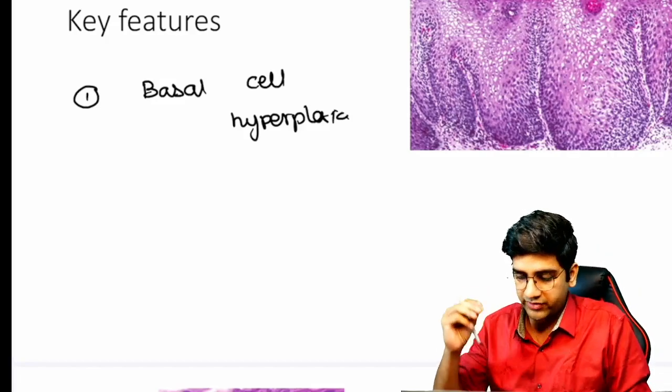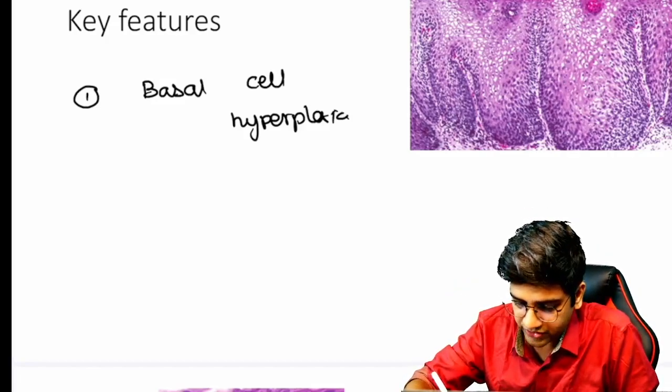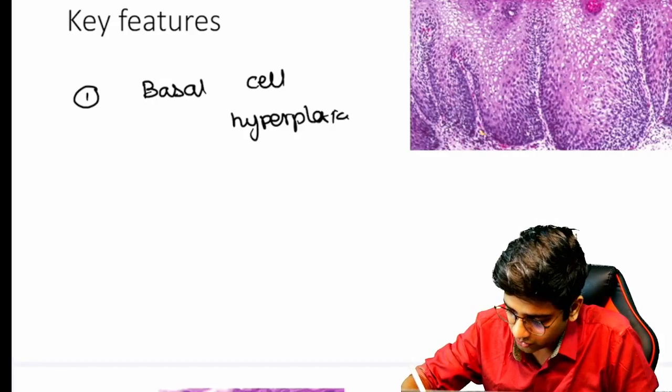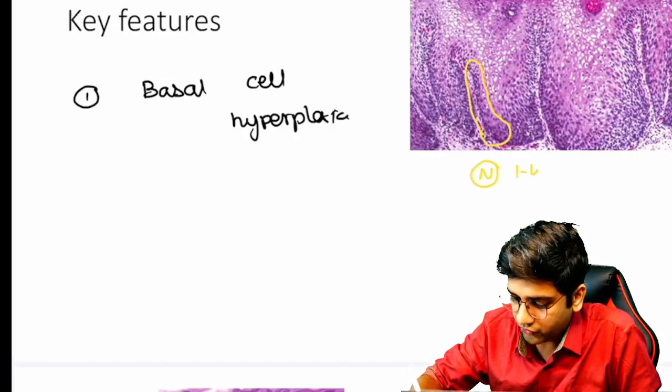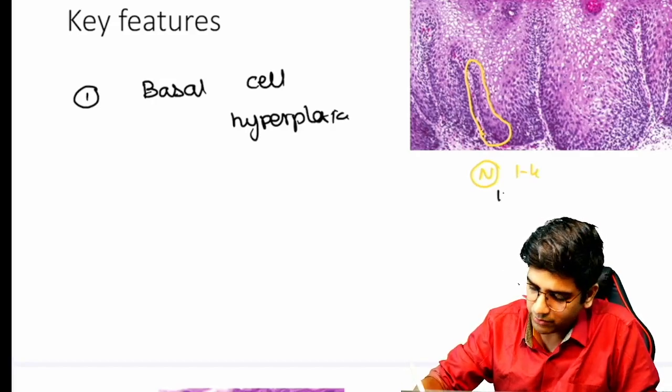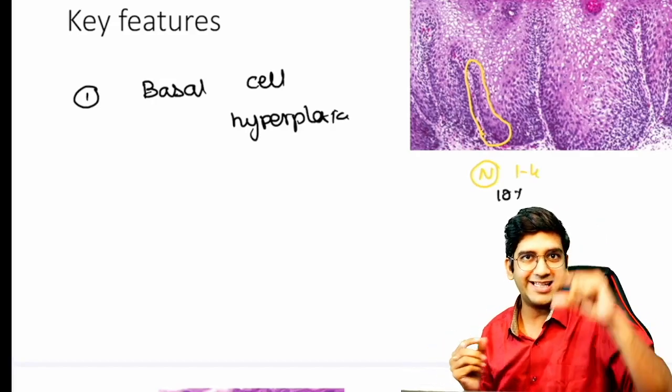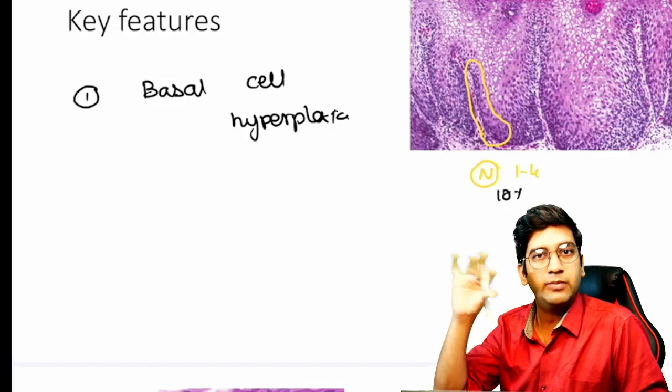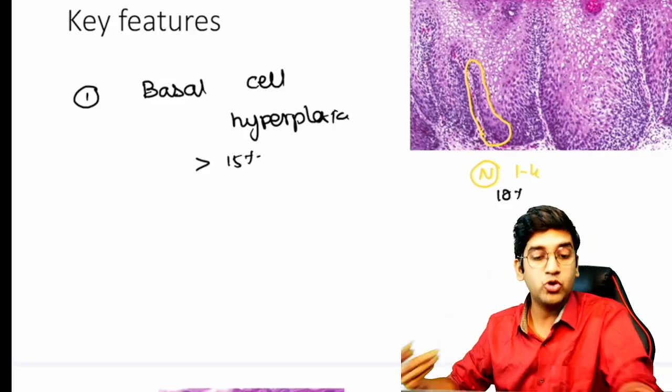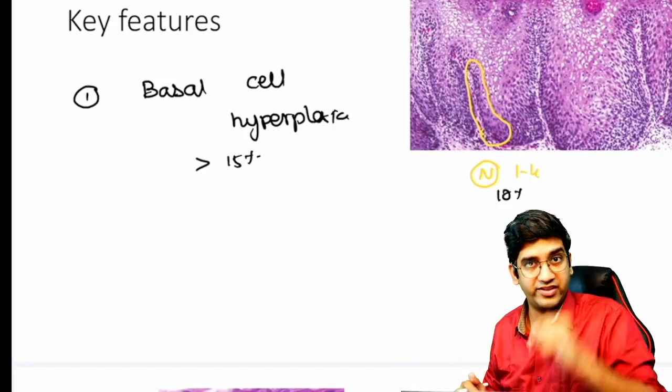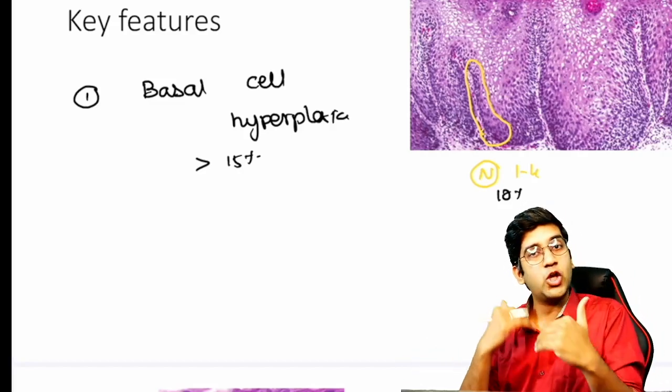When I take a normal basal epithelium of the esophagus, you can see here the normal basal epithelium. Normally it's around one to four layer thickness, or let's say approximately 10 percent of the entire thickness of the squamous epithelium of the esophagus. If it goes beyond 15 percent, I'm going to call that basal cell hyperplasia—beyond 15 percent of the thickness.